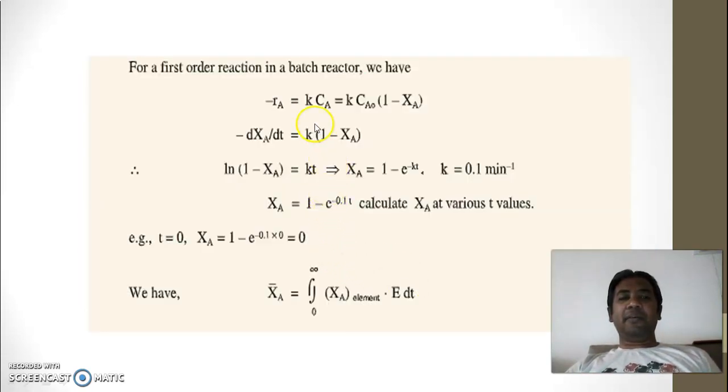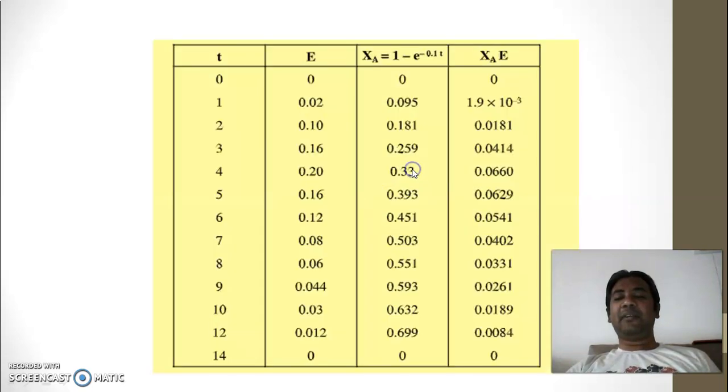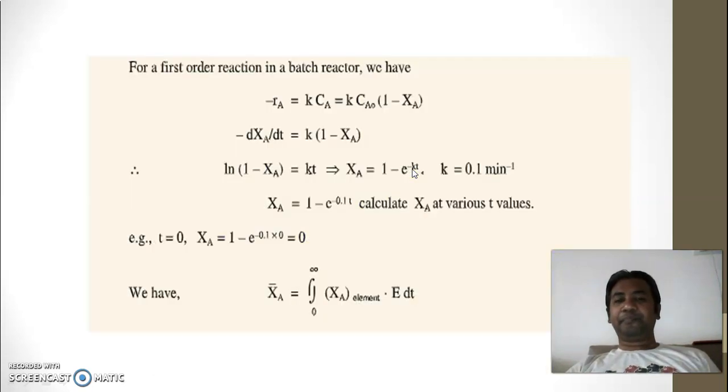Then now for first order reaction in unit number 2 we have already considered all this. So this equation we will get for first order reaction in terms of conversion, in terms of rate constant and time. XA is 1 minus E raised to minus KT. That is the equation you are getting. So average conversion is XA into E into dt. This is the final formula. So you require to find XA value for each and every time interval.